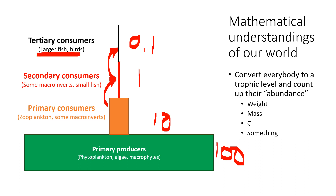If the tertiary consumer fed on primary producers, its biomass could be larger, but then the secondary and primary consumers would have to decrease because some energy available to them would be converted elsewhere. This assumes the system has a static amount of energy we're drawing from. We can also think of this in terms of production: there won't be just one giant tertiary consumer — there will be many tertiary consumers with some average size, which is very similar to how production was handled in the prior lecture.